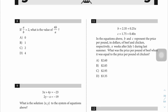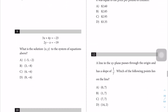Question 8: a over b is equal to 2. What is the value of 4b over a? First, take the inverse: b over a is equal to one half. Therefore, 4b over a equals 4 times one half, which is equal to 2. The answer is C.